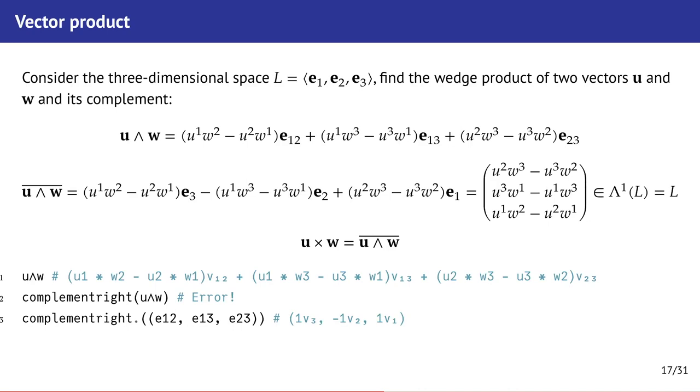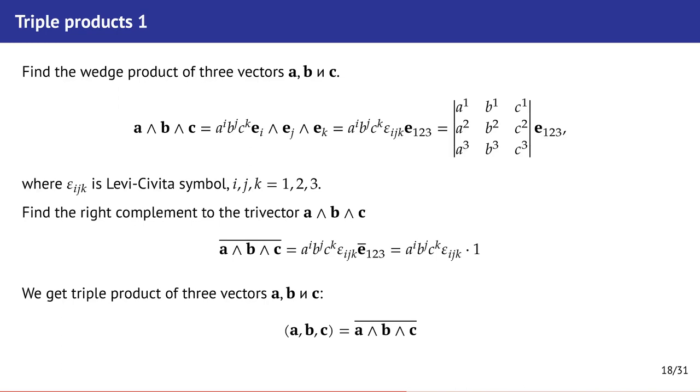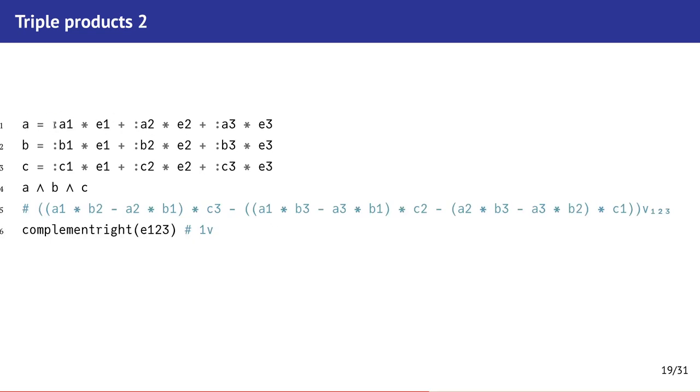Vector product can also be found as wedge product and right complement. It's enough to increase the dimension of the space. So the same operation gives us not a signed area but a vector product. If we find the multiplication of three vectors, wedge product of three vectors, and take a right complement, we will find three-dimensional product. Here it is. In this example, we can use symbolic coefficients, but when we want to use complement-right operation, it does not work.